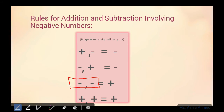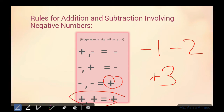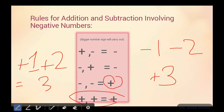Third part: jab dono numbers negative numbers hon — for example, negative two aur negative one — toh aap kya karenge? Minus, minus equals plus. Toh minus minus plus — two mein one ko plus kar denge, three aajayega. Aur dono negative numbers thay, toh answer bhi negative mein aayega. Aur agar dono numbers positive hon — for example, plus one aur plus two — toh unhe plus hi karenge. Same sign will always add, and different/opposite sign will always subtract.